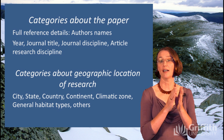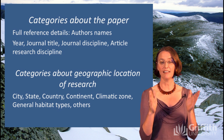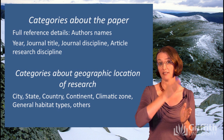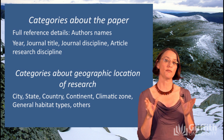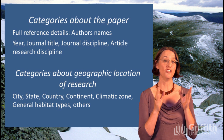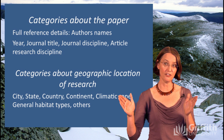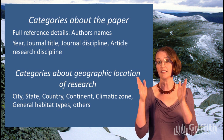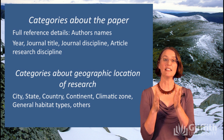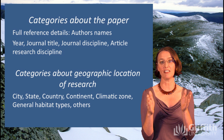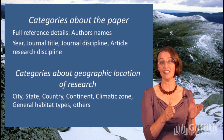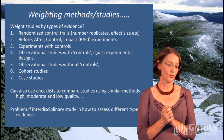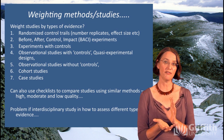You might have up to ten categories in your database just for location information. One of the things we found really important, although a pain, is it's generally better to have too many categories. It's easy to have all the data there and then collapse categories later. It's much harder to later realise you need to separate categories out - then you have to go back through all the papers.